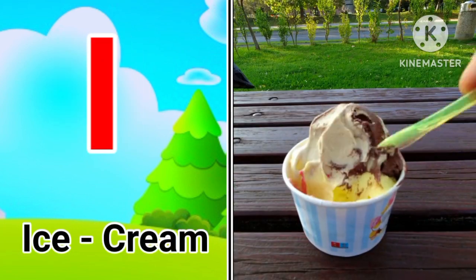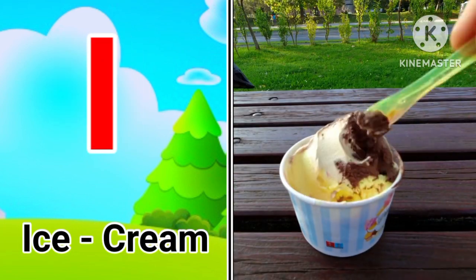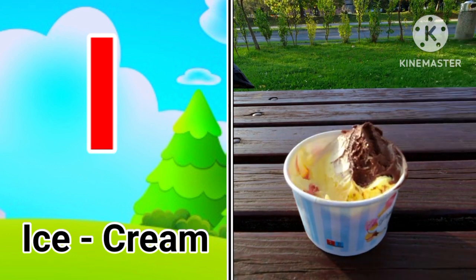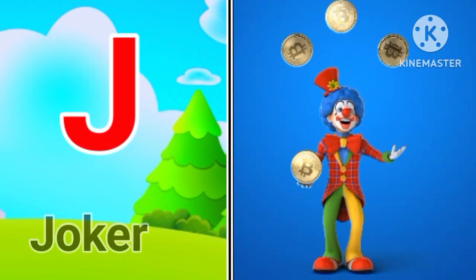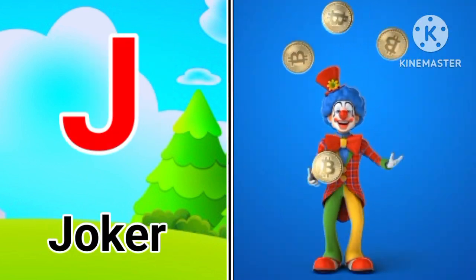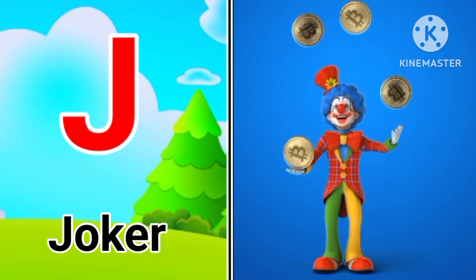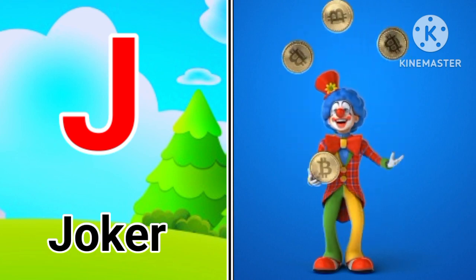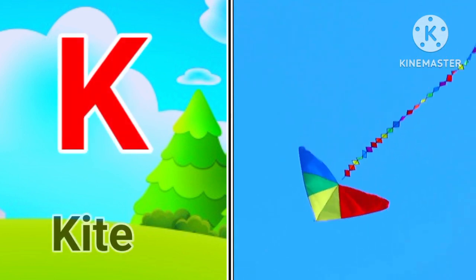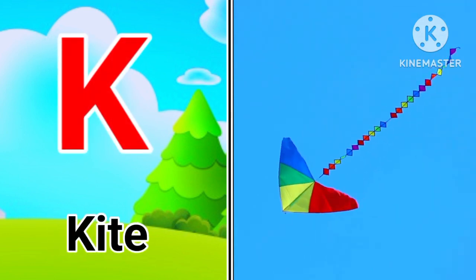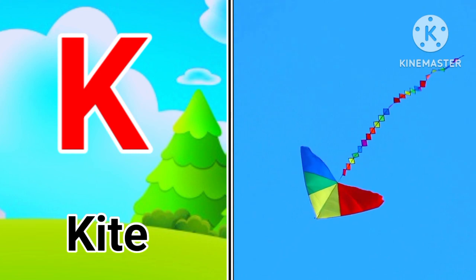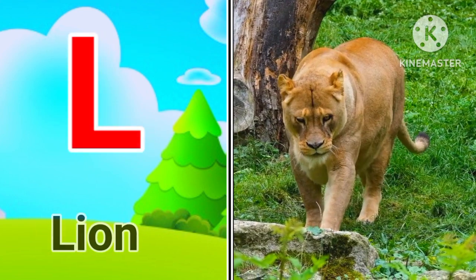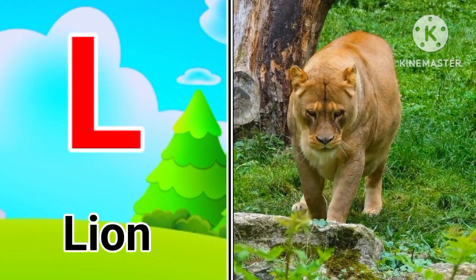H for hen. I for ice cream. J for joker. K for kite.